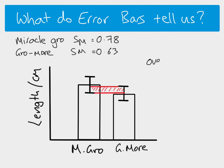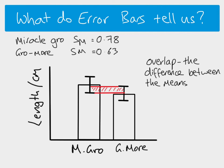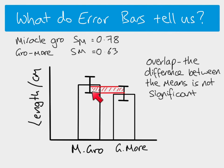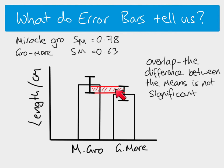If there is an overlap between the error bars, it tells you the difference between the means of the two data sets is not significant. Even though we calculated our mean as eight centimeters, our standard error tells us it could actually be anywhere within this range — we're 95% sure the true mean falls within plus or minus two standard errors. So it's possible that the mean for Miracle Grow is actually the same as the mean for Grow More. We can't be confident that the means are different or that Miracle Grow is bigger — it's not significant.